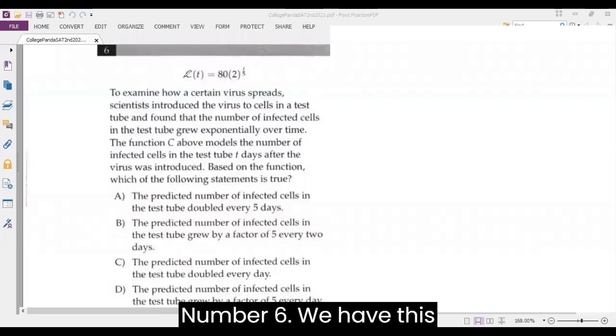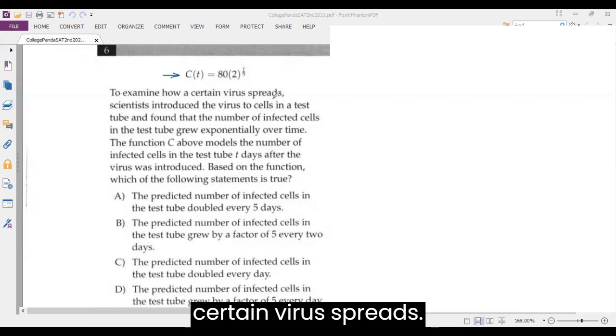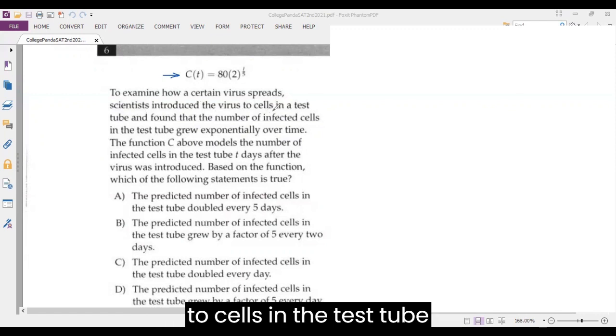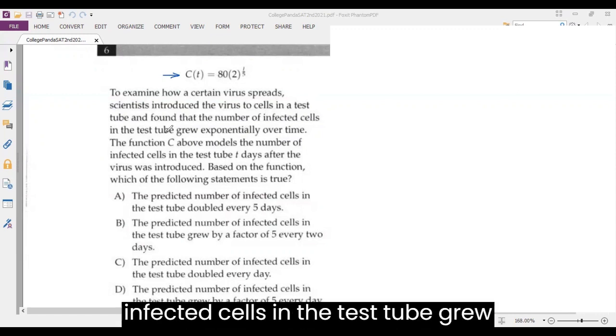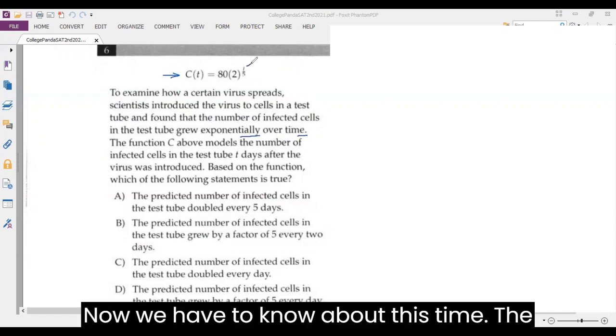Number six, we have this exponential function to examine how a certain virus spreads. Scientists introduced the virus to cells in a test tube and found that the number of infected cells in the test tube grew exponentially over time. Now we have to know about this time.